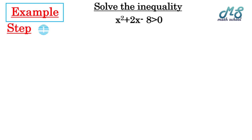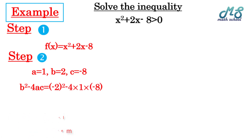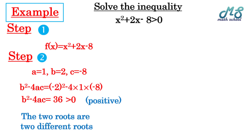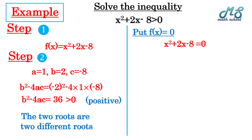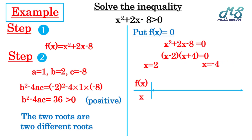Second example: solve the inequality x² + 2x - 8 > 0. Step 1: write the related function f(x) = x² + 2x - 8. Step 2: find the sign. a = 1, b = 2, c = -8. The discriminant b² - 4ac = 4 - 4(1)(-8) = 36, which is positive, so we have two different roots. Set f(x) = 0: x² + 2x - 8 = 0 factorizes as (x - 2)(x + 4) = 0, giving x = 2 and x = -4.